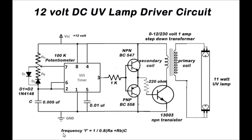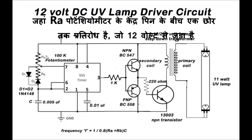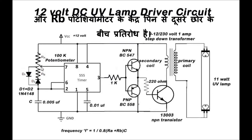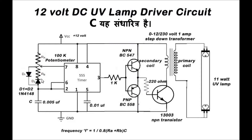The frequency is given by the formula: 1 divided by 0.8 times (Ra + Rb) times C. Where Ra is the resistance between the center pin of the potentiometer to one end, which is connected to 12V, and Rb is the resistance between the center pin of the potentiometer to the other end. C is this capacitor.